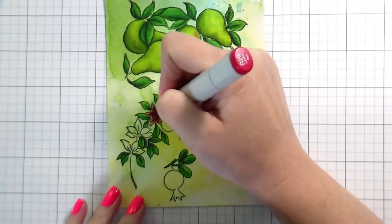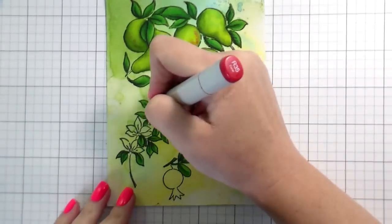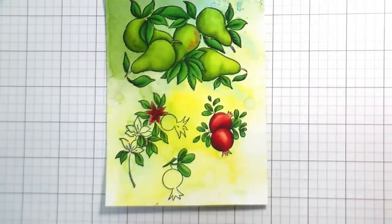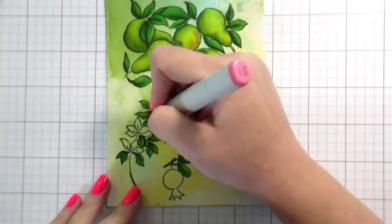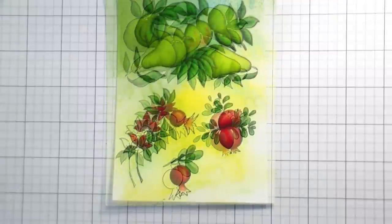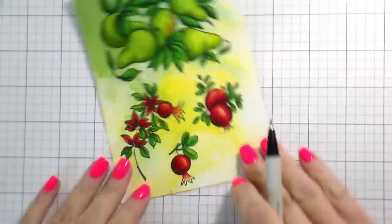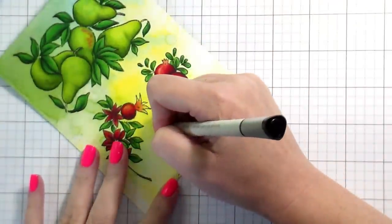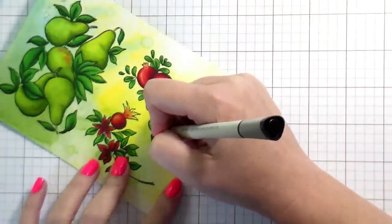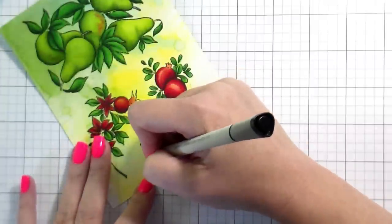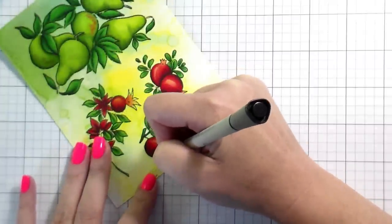You can also see the pattern that the watercolor created shining through the copic coloring, especially where the lighter colors are concerned. For this pomegranate branch, just something to note—I'm pretty sure the bottom two are supposed to be leaves and not flowers. I took some creative liberties. I'm not sorry about it, just to get a little bit more red in there because I did have so much green.